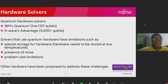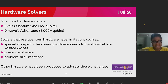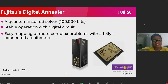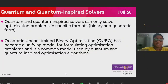Hardware solvers have been of research interest in recent years. There are, however, limitations of quantum hardware solvers. Other hardware solvers have been proposed to address some of these limitations. An example is Fujitsu's Digital Annealer, which is not a quantum hardware solver, but uses inspiration from quantum solvers to achieve some speed-up when solving optimization problems. Some of the advantages are that it's stable at room temperature and has a fully connected architecture. Regardless of the difference in hardware, the formulations of the problems are similar. QUBO formulations are often used for these architectures, and that's what we use in this study.